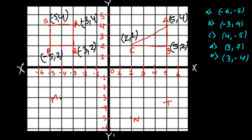For point M, along the x-axis it is minus four, and along the y-axis it is minus three — so M is minus four, minus three. For point N, along the x-axis it is minus five and along the y-axis it is positive two, so N is minus five, two. For point T, along the x-axis it is positive five and along the y-axis it is minus three, so T is five, minus three.